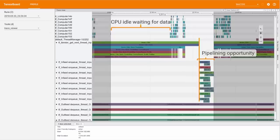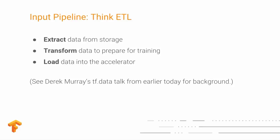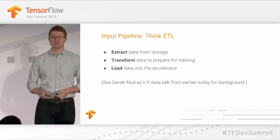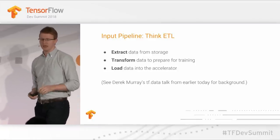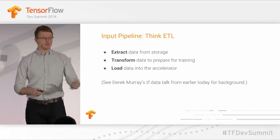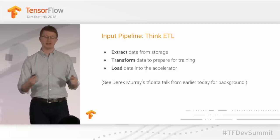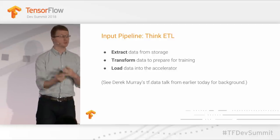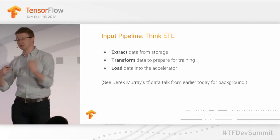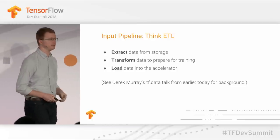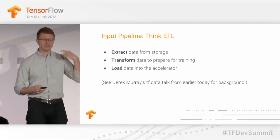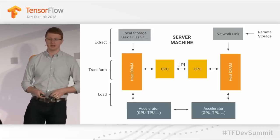Input pipelines you should always mentally associate with ETL. Extract is the first phase where you load the data from storage. Transform is where you prepare it for training. And finally, you Load it into the accelerator. This is reflected not just in the API but is a very useful mental model when thinking about performance.